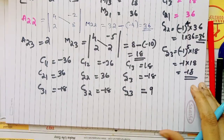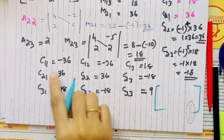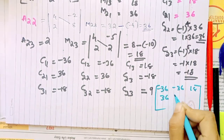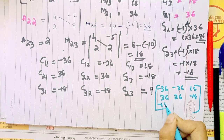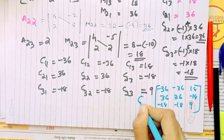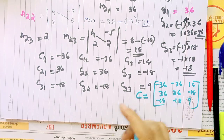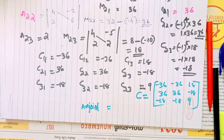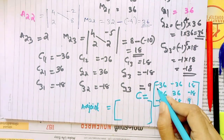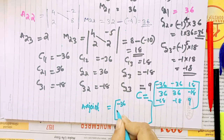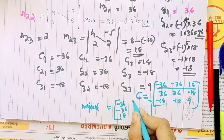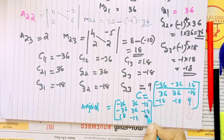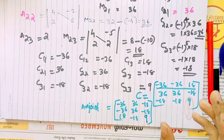The full cofactor matrix is: first row is negative 36, negative 36, 18; second row is 36, 36, negative 18; third row is negative 18, negative 18, negative 9. These are all the cofactor matrix entries. Now, the Adjoint will be the transpose of this cofactor matrix — rows become columns. So first column is negative 36, negative 36, 18; second column is 36, 36, negative 18; third column is negative 18, negative 18, negative 19. This is the adjoint of the matrix.